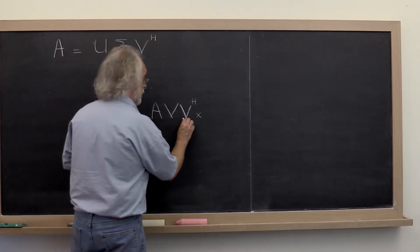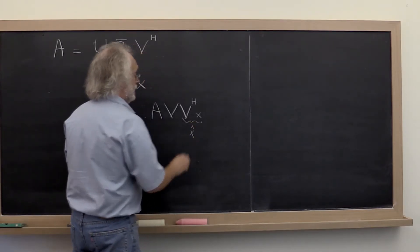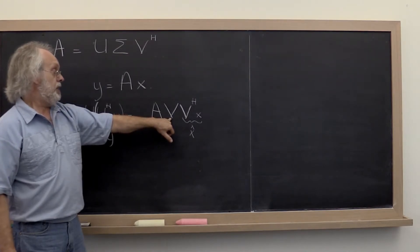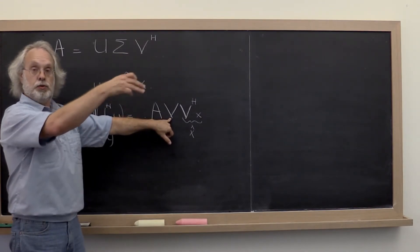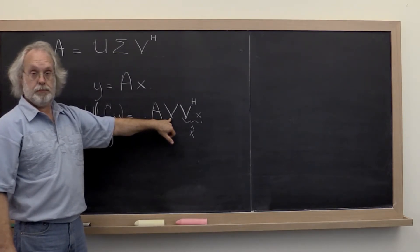Similarly this right here is just the vector x except when viewed in the basis that constitutes the columns of v. Right?